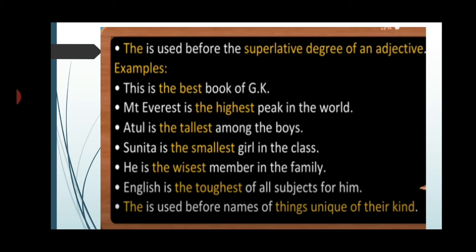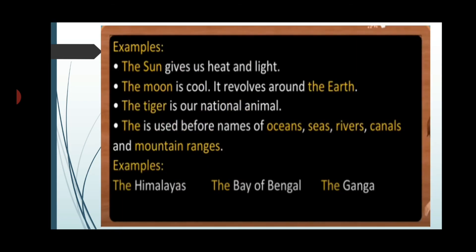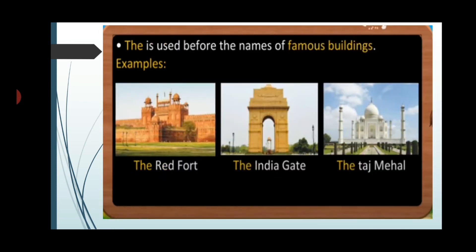The is used before nouns that are unique of their own kind. The sun gives us heat and light — the sun is a universal truth, so we use the. The moon is cool; it revolves around the earth. The earth is again a universal truth. The tiger is our national animal — we are specifically pointing to the tiger. The is also used before names of oceans, seas, rivers, canals, and mountain ranges. For example: the Himalayas, the Bay of Bengal, the Ganga. The is used before the names of famous buildings too, such as the Red Fort, the India Gate, and the Taj Mahal.